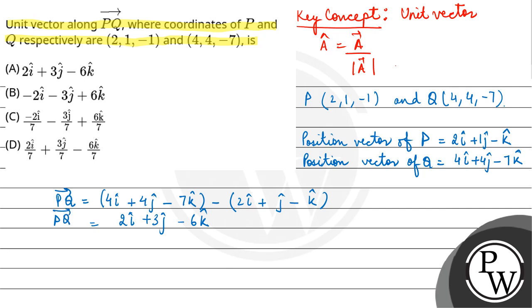Now the unit vector along PQ, represented as P̂Q, would be (2î + 3ĵ - 6k̂) divided by its magnitude. The magnitude is √(2² + 3² + 6²) = √(4 + 9 + 36) = √49 = 7.